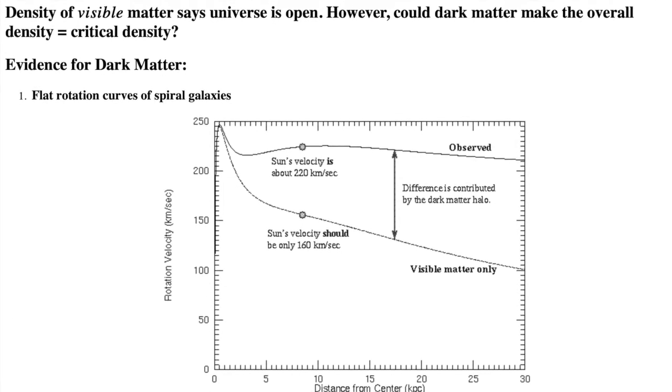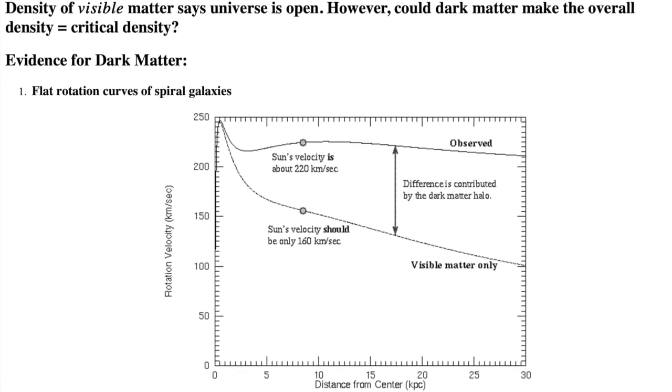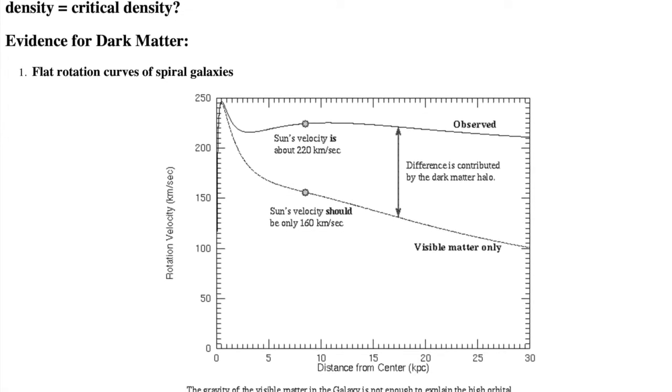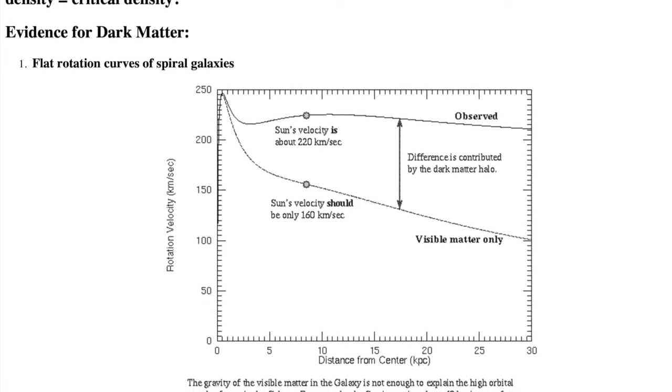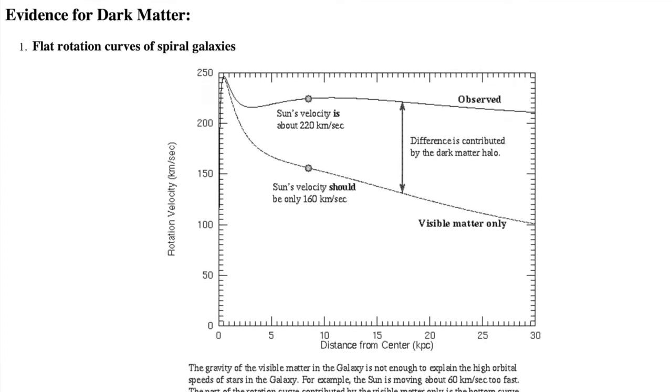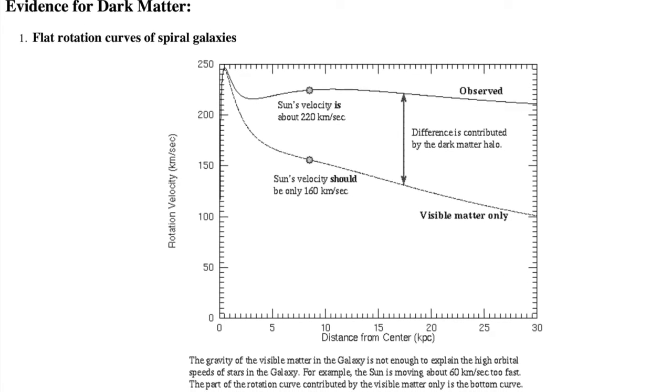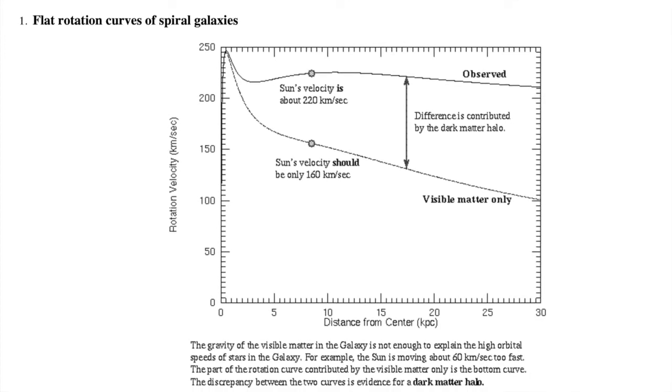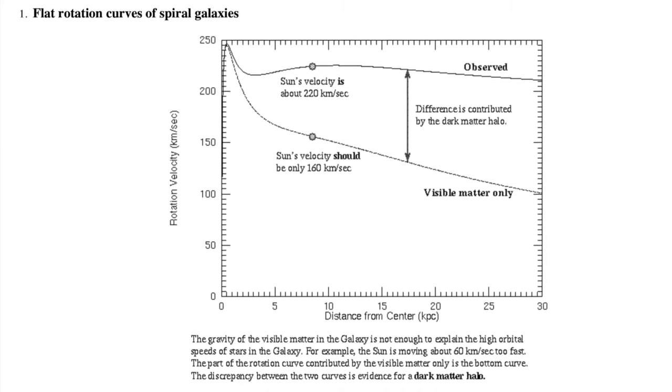This slide is about the various independent pieces of evidence for that strange stuff we call dark matter. The rotation curve plot we looked at in the Milky Way lecture tells us about the total mass within a given orbit, both the regular visible matter and the dark matter. The visible matter doesn't add up to enough gravity to make the stars and gas move as fast, acceleration, as they do in the spiral galaxies.